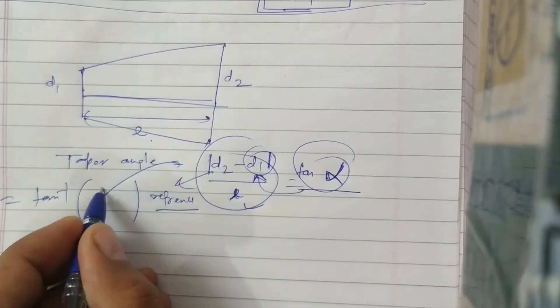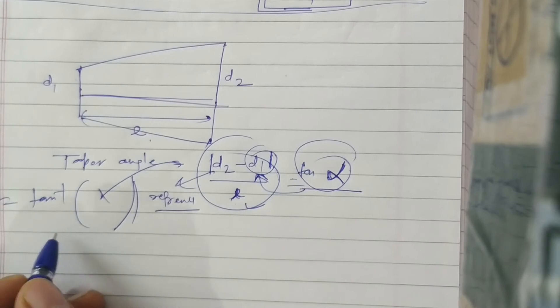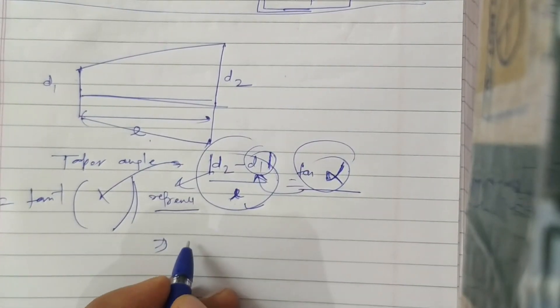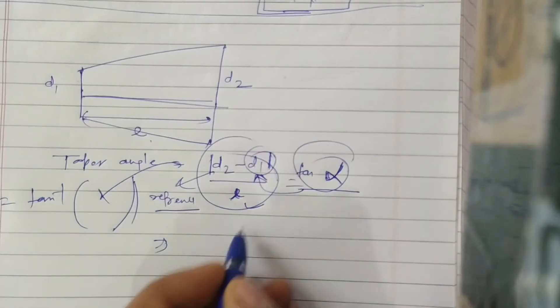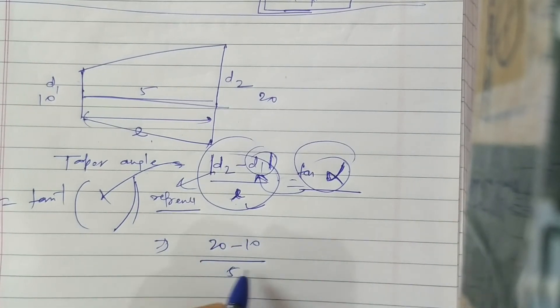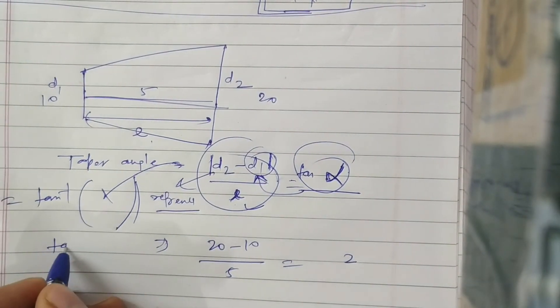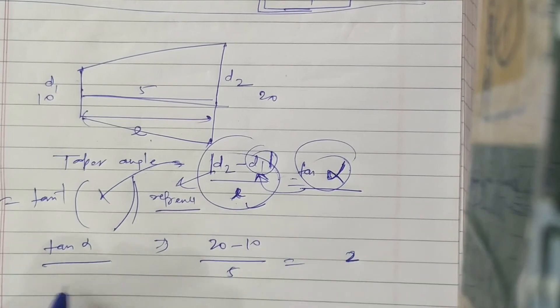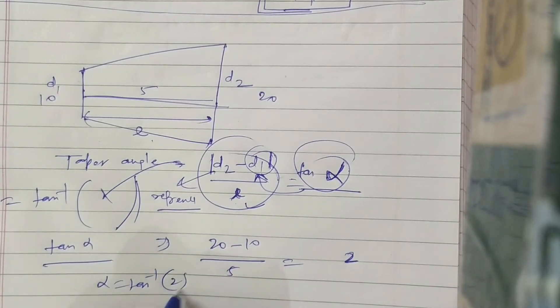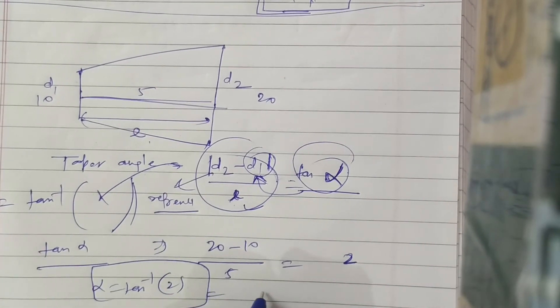So that's it. For example, if d2 is 20, this is 10, length is 5, so 20 minus 10 upon 5 equals 2. So tan alpha equals 2, so alpha will be tan inverse of 2.